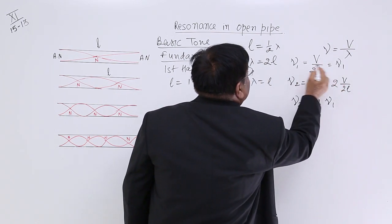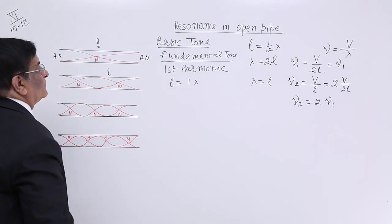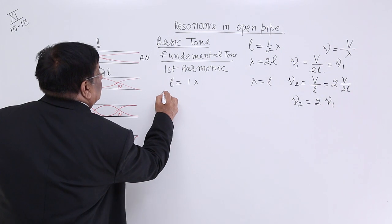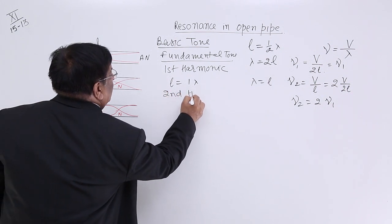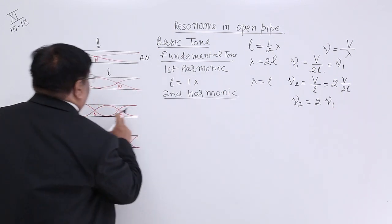So this frequency was nu1 and this is double of it, 2 nu1. So we call it second harmonic because it is double.